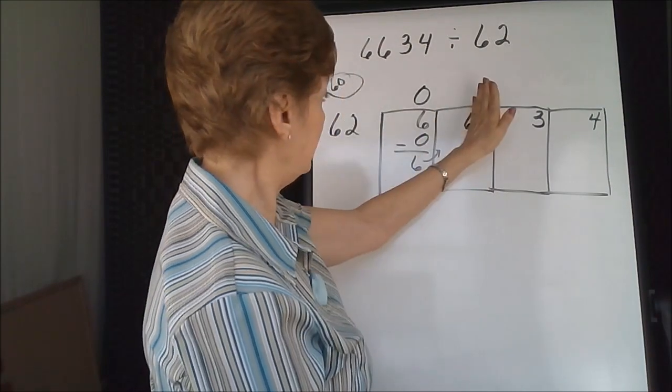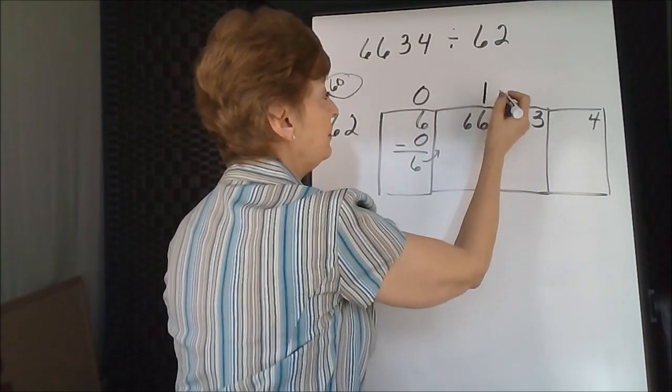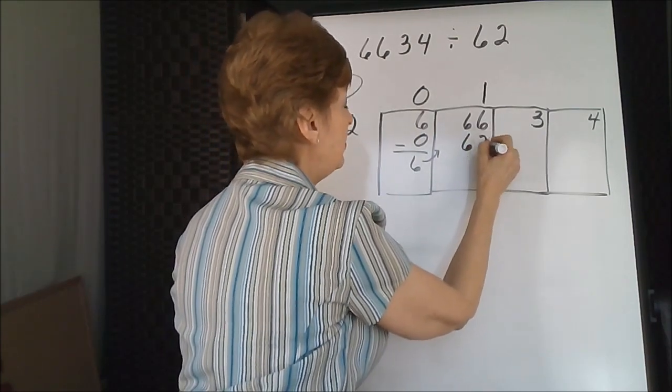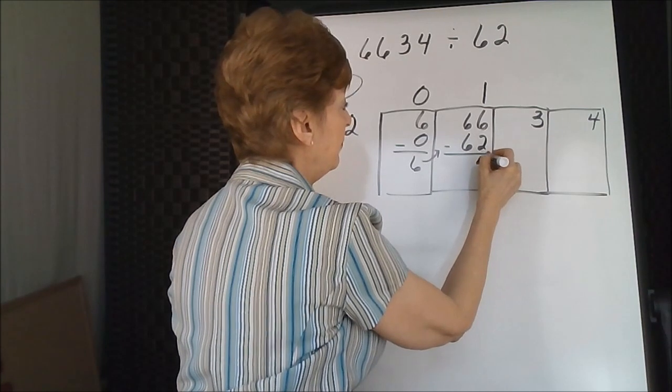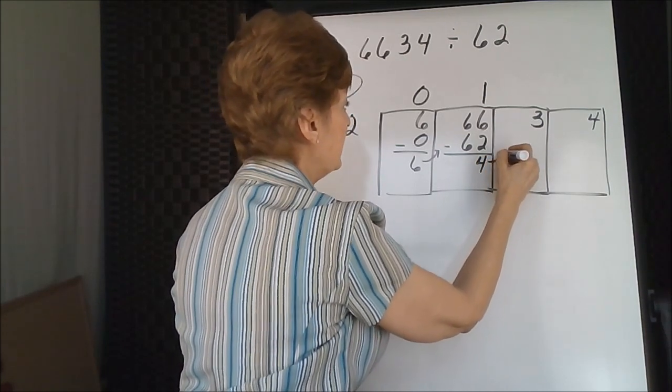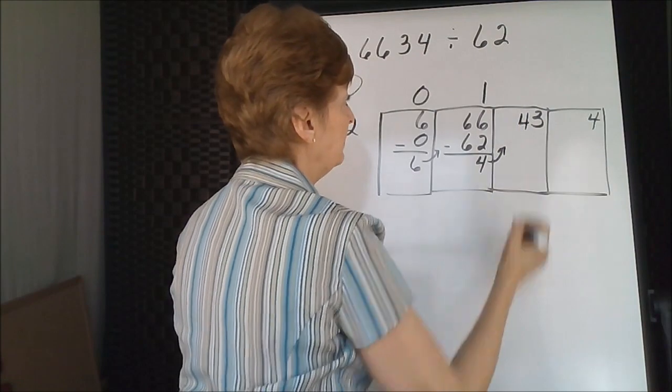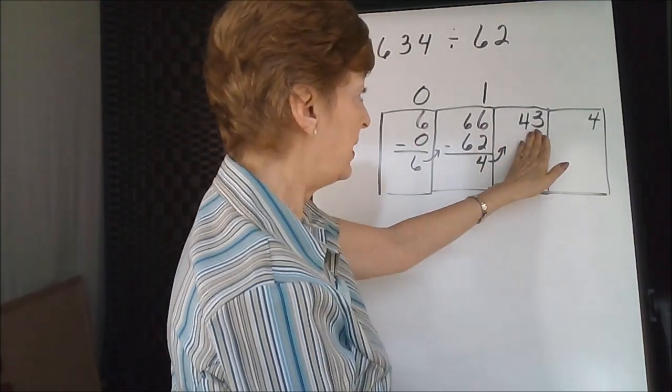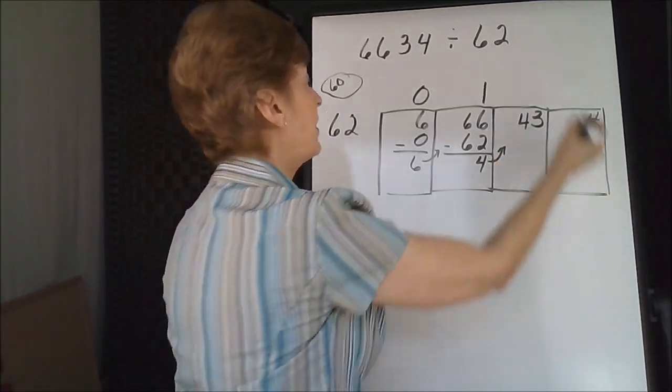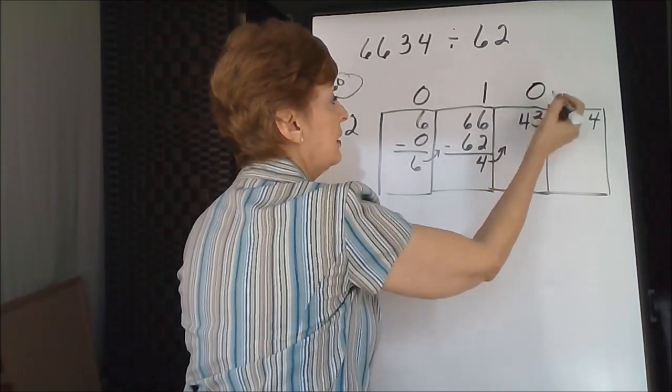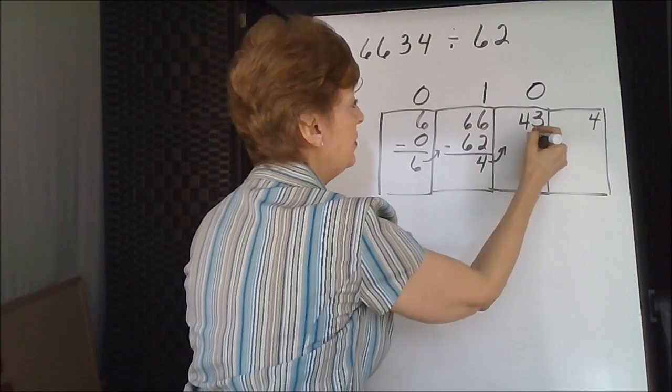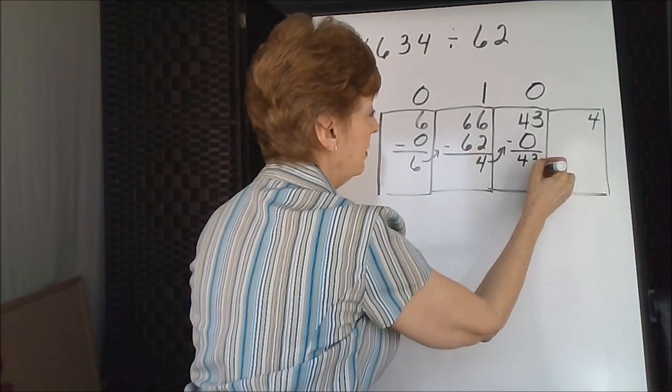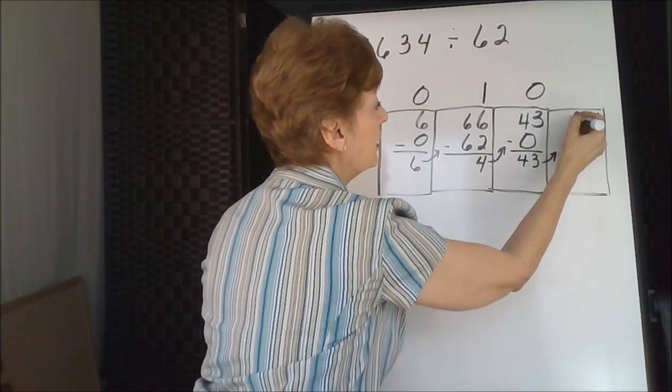6 goes into 6 one time. 1 times 62 is 62. Subtract. 62 will not go into 43 at all. So there's another 0. 0 times 62 is 0. The subtraction gives us 43, which goes into the last box.